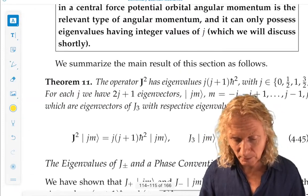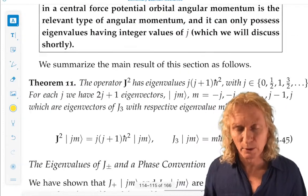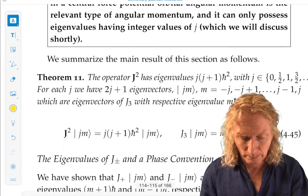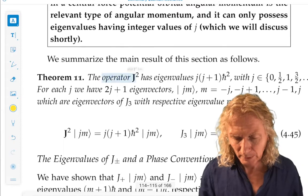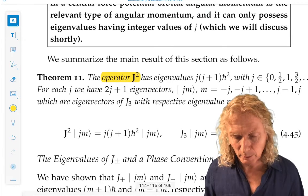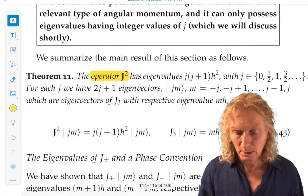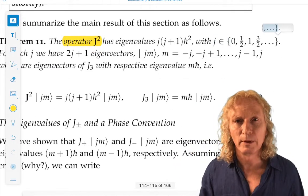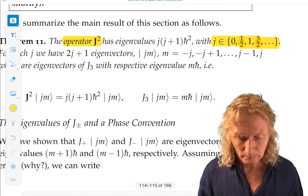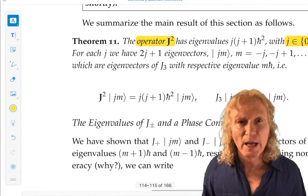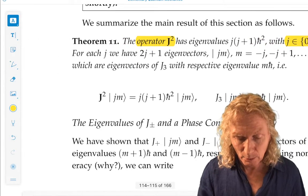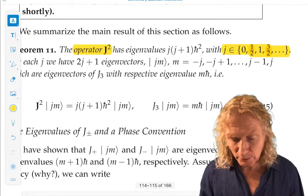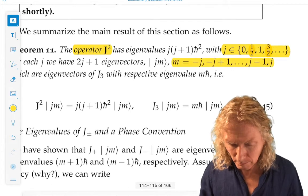Let me summarize this in the theorem we have here. This is basically the characterization, which I pointed to, that we've been trying to get after the last couple of lectures. The operator J squared has eigenvalues J times J plus 1 H bar squared. And J can take on these values. For each J, fixed J, we have 2J plus 1 eigenvectors, because M can go from minus J to J.